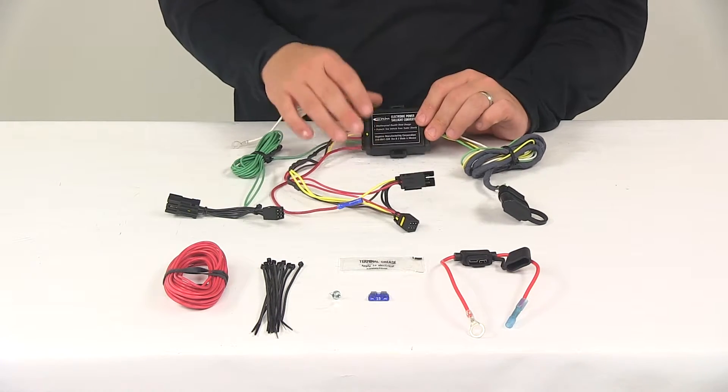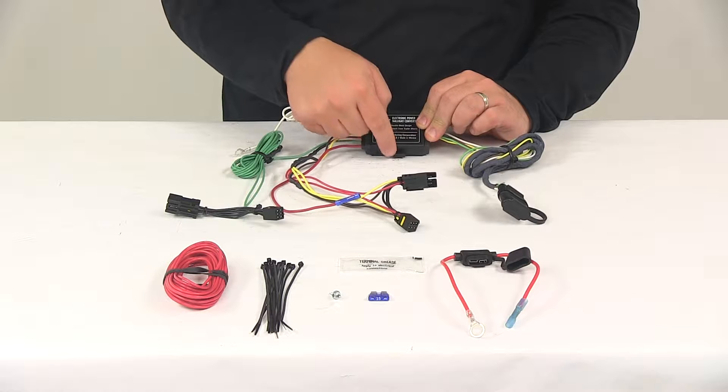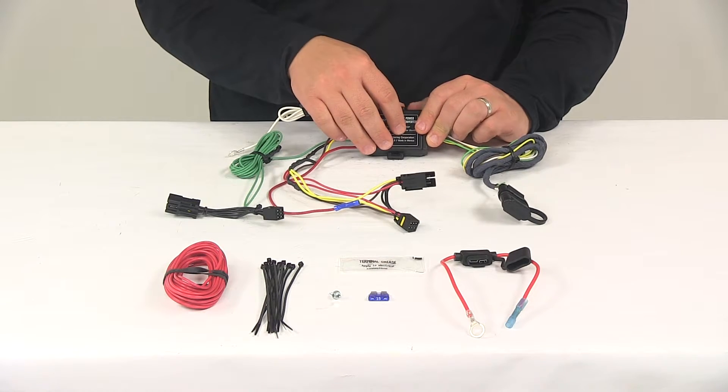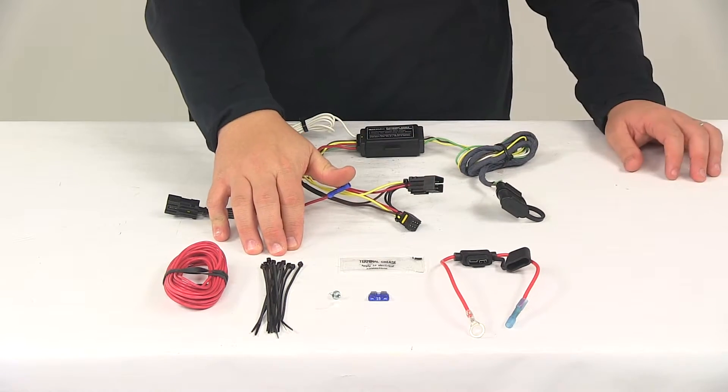And then you'll need to mount the converter box to a nice out of the way location. It's got a mount located on each side. That way you can get it secured out of the way using the included cable ties.